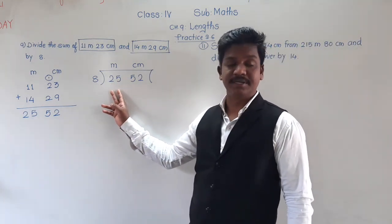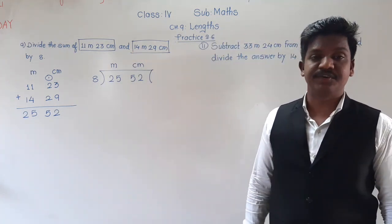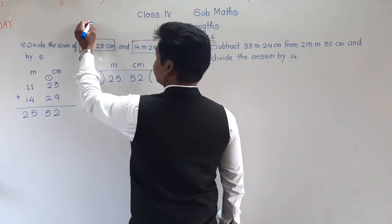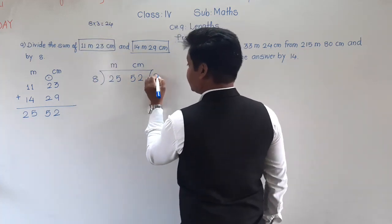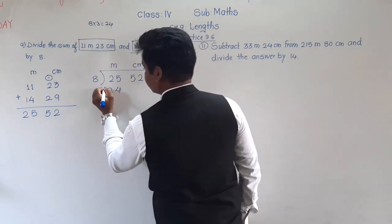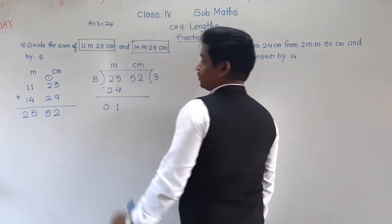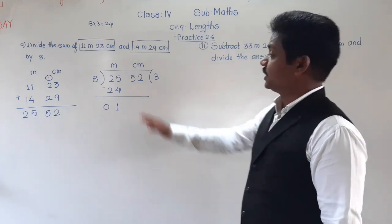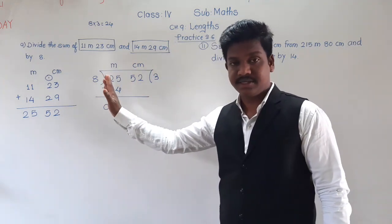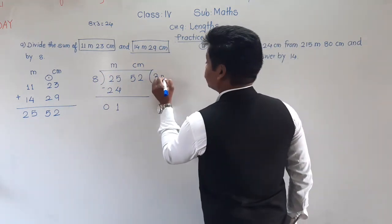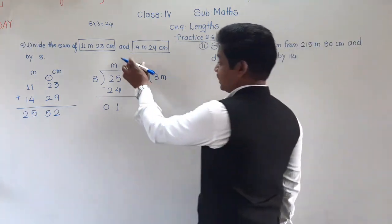Let us divide. First the meter column: there is 25 in the meter column. Is 25 in the table of 8? No. The smaller number than 25 in the table of 8 is 24 — 8 threes are 24. So 25 minus 24: 5 minus 4 is 1, 2 minus 2 is 0. Meter column is finished. In the quotient, write 3 meter — we have got 3 complete meters.